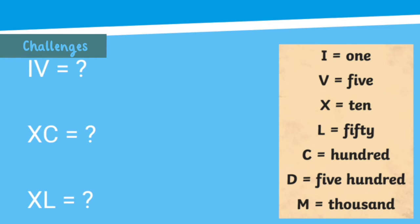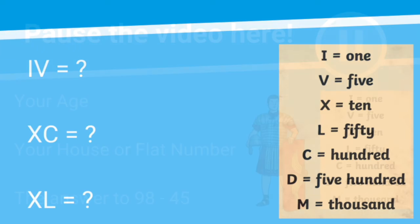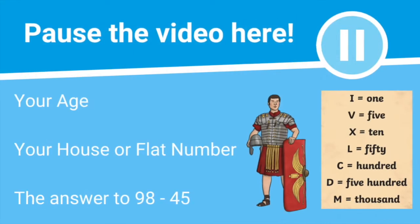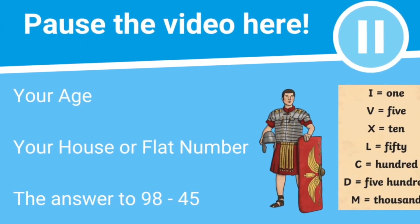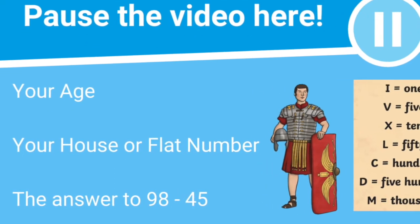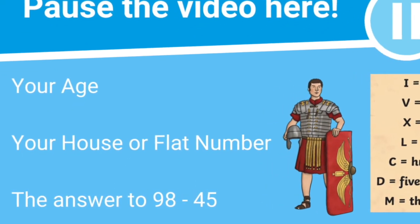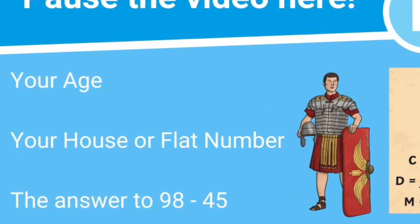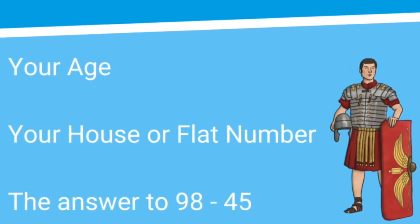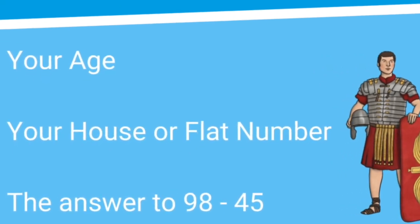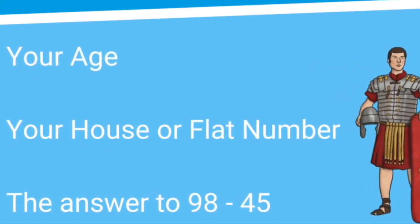Except this time all of the examples will require you to do some subtracting. When you pause the video you need to work out your age in Roman numerals, your flat or house number in Roman numerals, and finally the answer to 98 take away 45.